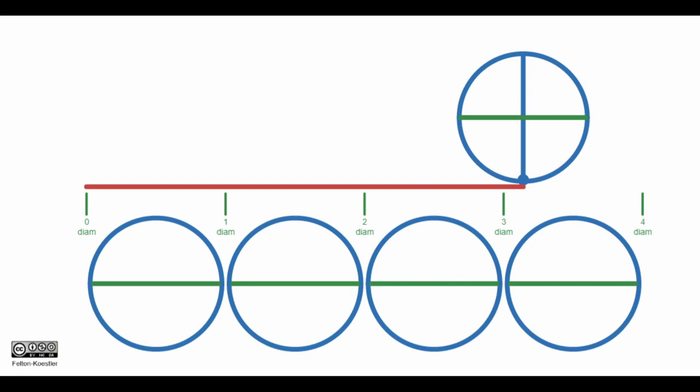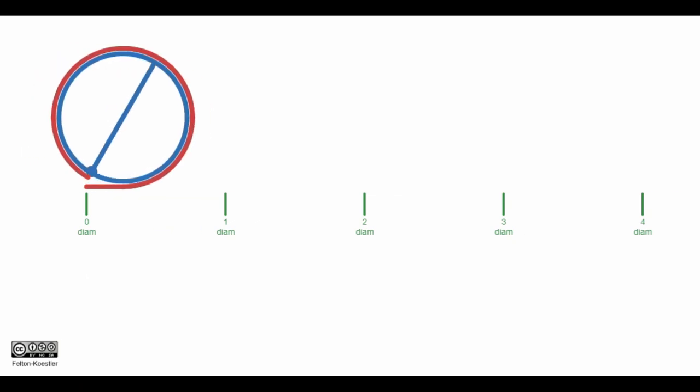And we can see that the circumference, or the red ribbon, is a little bit more than three diameters long. I'm going to reset the image, leaving my diameter lengths on just so we can see it unfurl one more time.